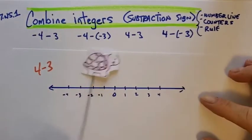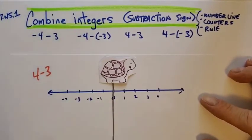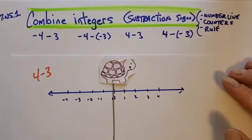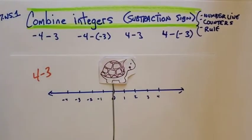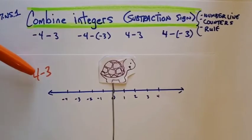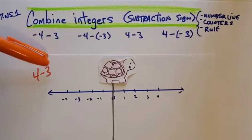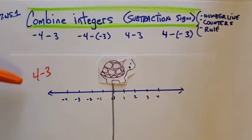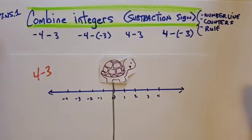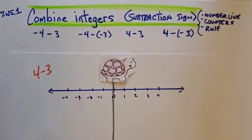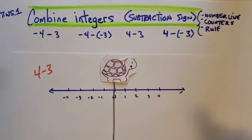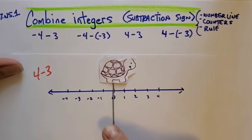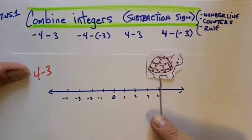So we've got Trini, my famous turtle. Trini is going to walk 4 minus 3 on the number line. When you see something like 4 minus 3, here's what you do. We start at 0, just like we did for integers last time. It says 4, so we're going to go out to positive 4: 1, 2, 3, 4.